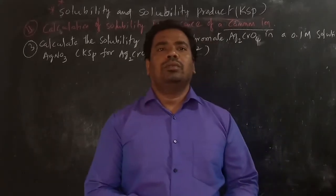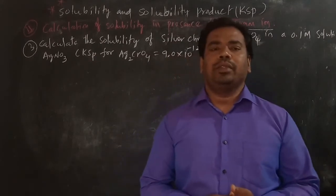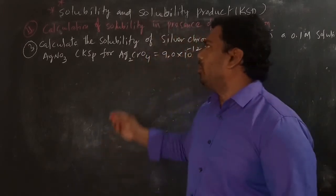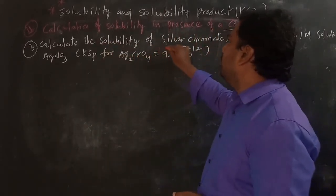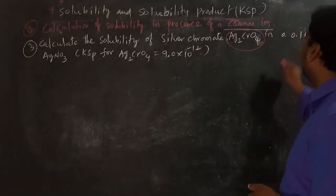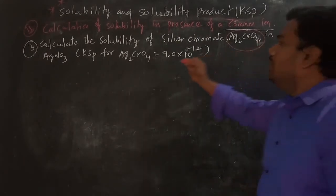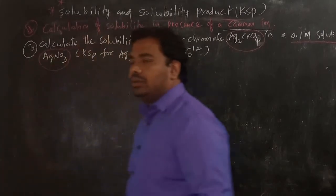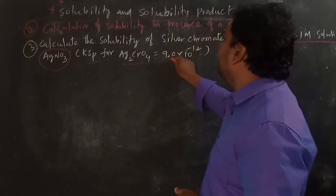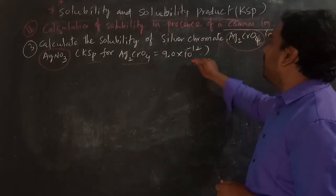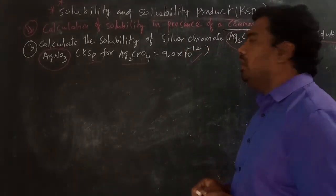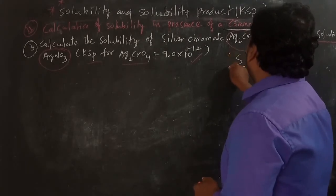We will do a few more problems based on solubility when the common ion is present in a sparingly soluble salt. The problem is: calculate the solubility of silver chromate in 0.1 molar solution of silver nitrate. The solubility product of Ag₂CrO₄ is given as 9.0 × 10⁻¹².